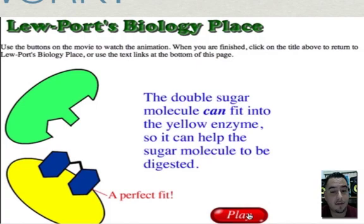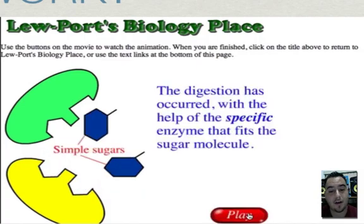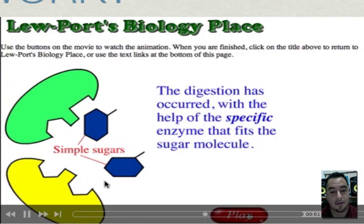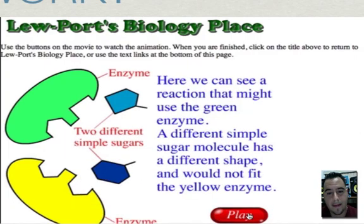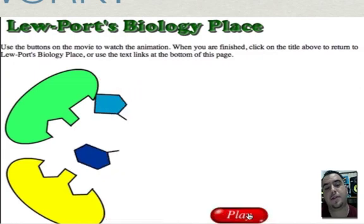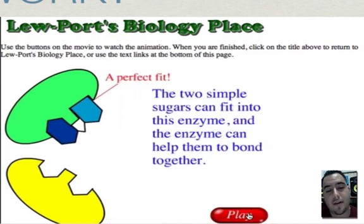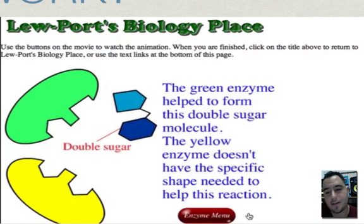But the yellow one is because it fits in the yellow spot. That's called the active site. You can see it right there. And again, we have other types of substrates and they can fit in the green enzyme because that's the responsibility of that green enzyme to perform that reaction.